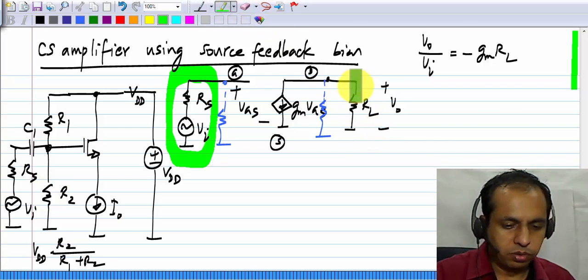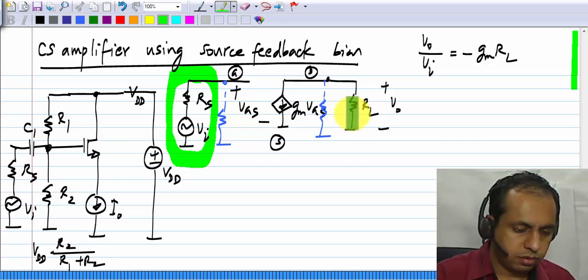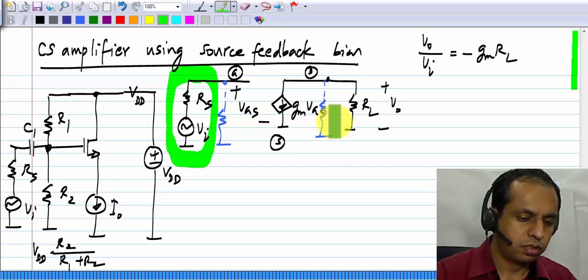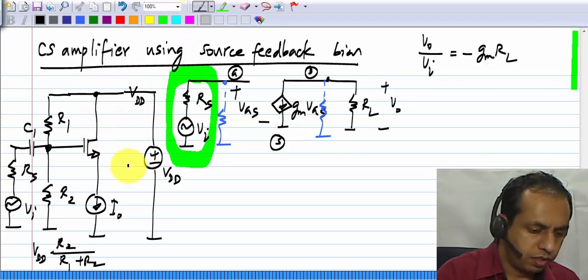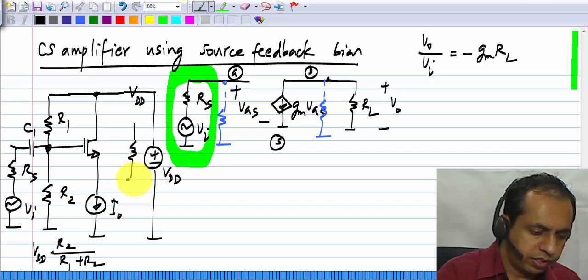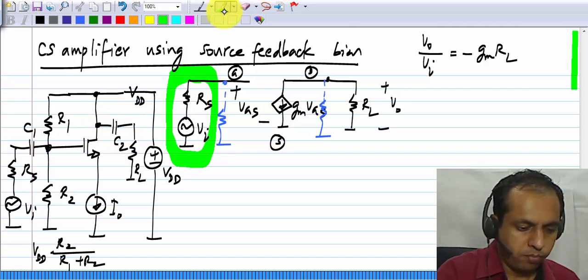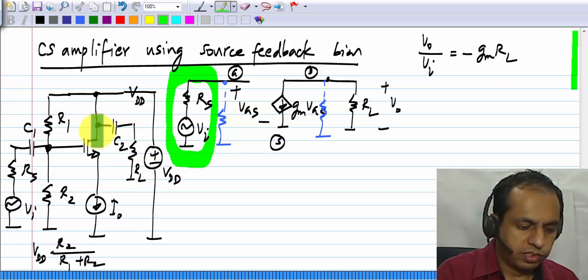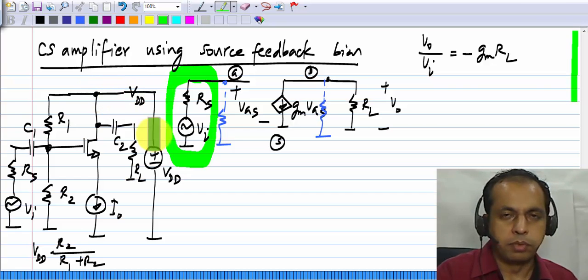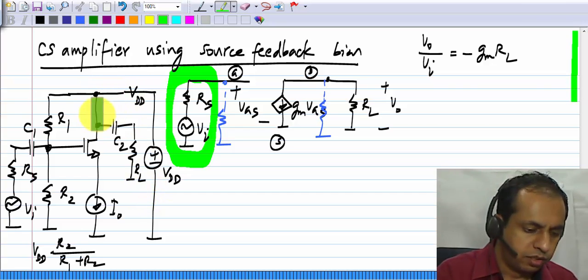Now, we have to be able to connect the load, and the drain cannot be connected to the supply voltage directly. If we do, we know that we can connect the load to the drain by AC coupling, so that the DC value is blocked, and only the signal appears here. But if this is connected directly to Vdd, the drain is connected directly to Vdd, Vdd is nothing but ground in the incremental picture.